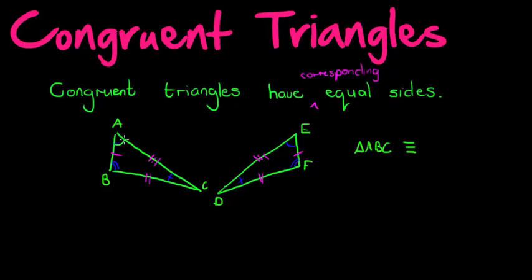For example, angle A is congruent to angle A, B is congruent to angle B, C is congruent to D. You can't just write it in any order — it must be the same order in which they are congruent. That's how we understand what congruent triangles means.